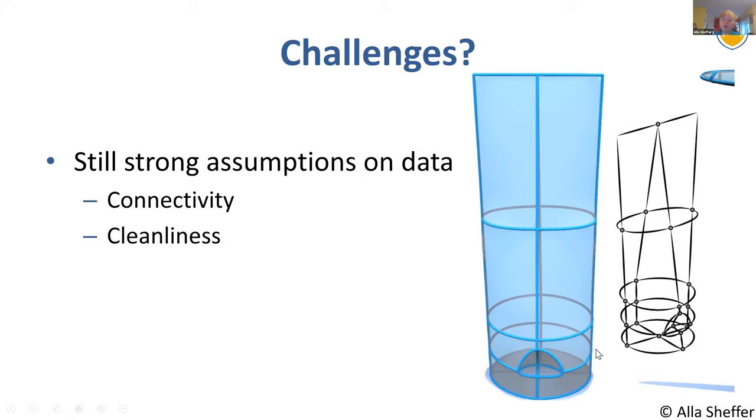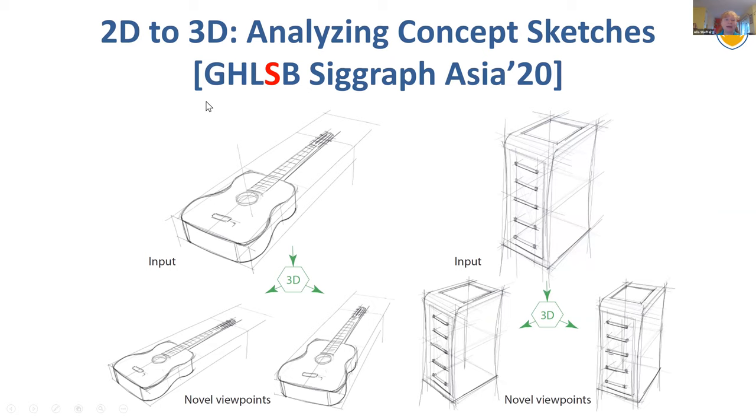So we can go now much further. We can go from a 2D drawing to a 3D network. However, we are still making very strong assumptions on the data. We assume that we have all the connections. And we assume that the data is extremely clean. There's no overdrawing. So that part can be partly solved by the paper I discussed earlier, where we can go from an overdrawing drawing to one which is clean.